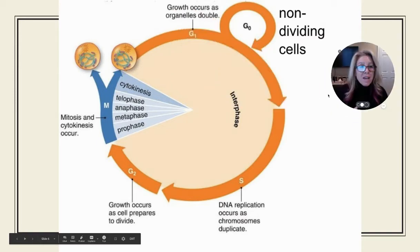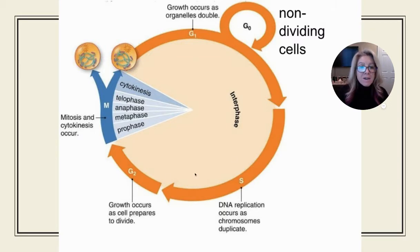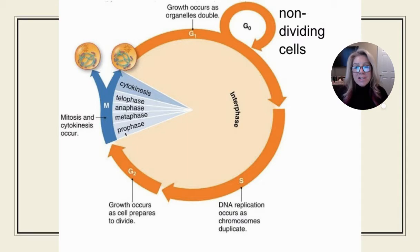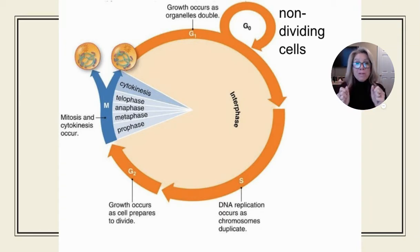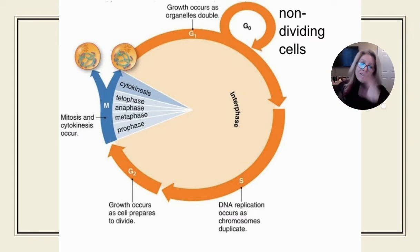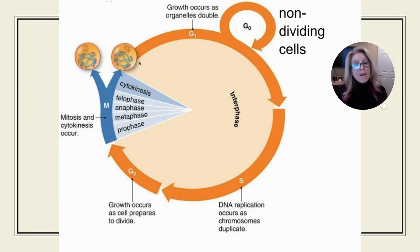For the cell cycle, the bulk of the cell spends its time in interphase, which actually has three parts: G1, S, and G2. The M stage consists of mitosis and cytokinesis. Mitosis is all about the nucleus of the cell — the genetic material — and involves the separation of chromosomes. Cytokinesis involves dividing everything else: the organelles and cytoplasm. Cytokinesis technically happens overlapping with telophase, a stage of mitosis.